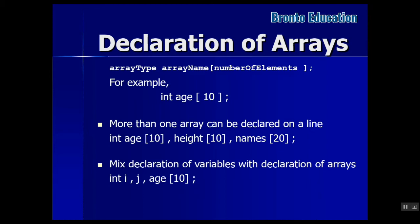For example, here we have an integer type array named 'age' that stores 10 elements. More than one array can be declared on one line — for example, integer age of 10, height of 10 elements, and names of 20. However, there was a mistake: names cannot be integer type, so instead you would use a string data type, which I'll show in the next lectures.